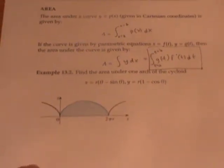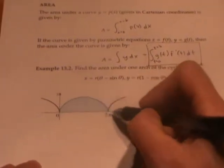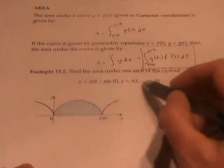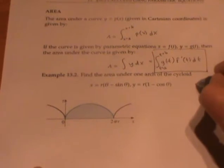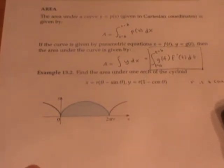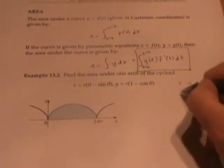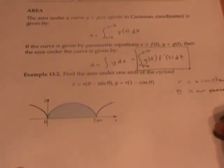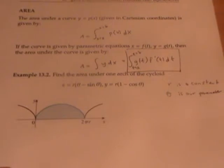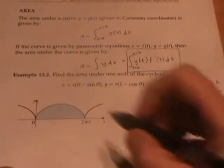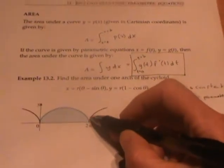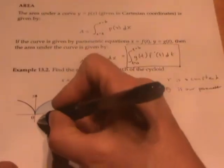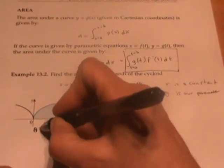Let's use that formula to find the area under one arch of the cycloid, given by these two equations. Here, r is a constant, and theta is our parameter, standing in for the variable that we usually call t. If we want to get just one arch of the cycloid, then we want to start when theta equals zero.